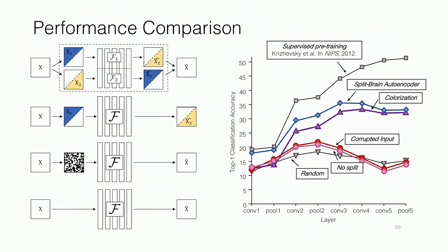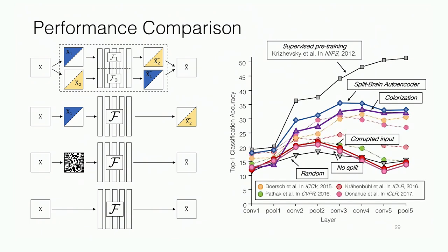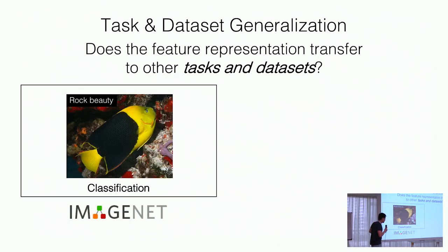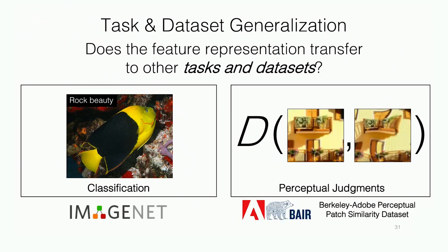Around this time, other self-supervised methods existed, but by this metric our system was actually state-of-the-art, which was surprising because our system was very simple — we just divided the input tensor into two. Even though we began focused on the graphics task of colorization, we got a nice unsupervised learning result as well. We're also interested in how well these features work as a model for human perceptual judgments. This work was done as an intern at Adobe.